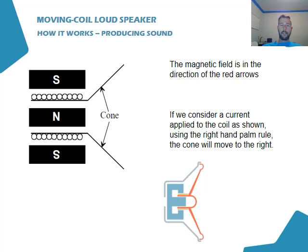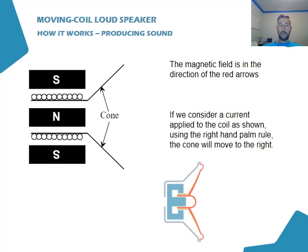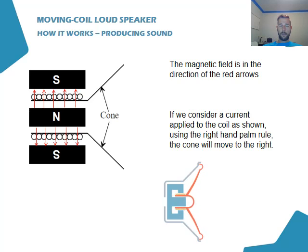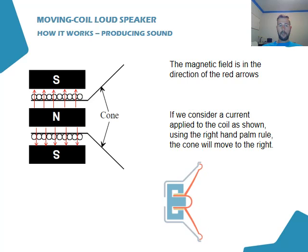How exactly do the speakers produce a sound? When we've got the magnetic parts of the speaker, you can see there's a magnetic field between them, and this goes from north to south — meaning a north dipole placed in the field will travel in that direction. You can see the arrows pointing up here and down there.